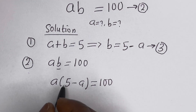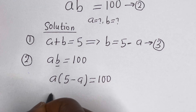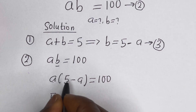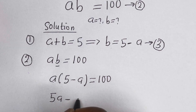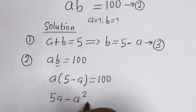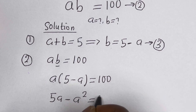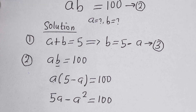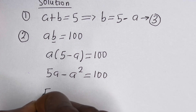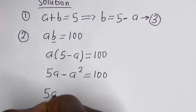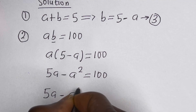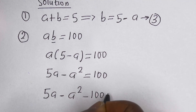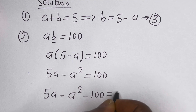Let us open the bracket: A multiplied by 5 is 5A, minus A multiplied by A, which is A squared, is equal to 100. This simplifies to 5A minus A squared minus 100 is equal to 0.